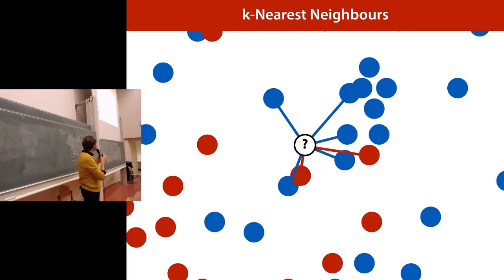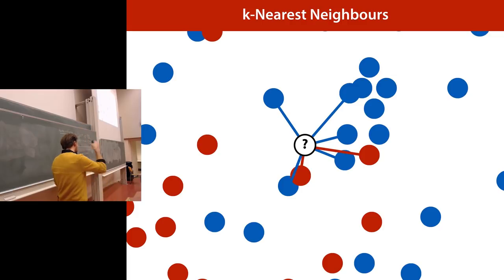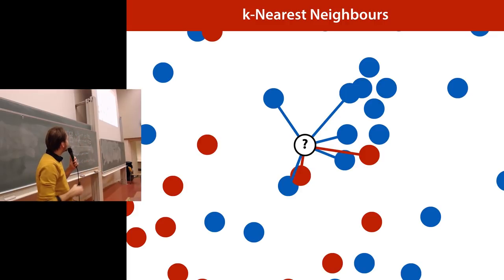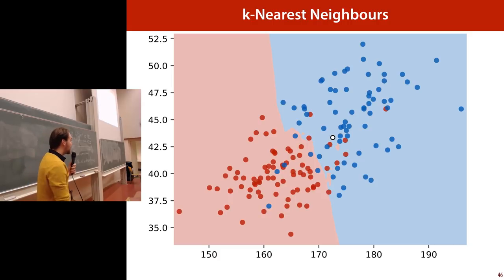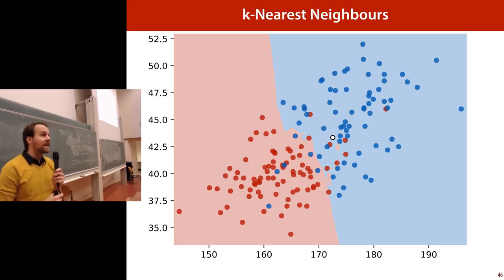Final example: k-nearest neighbors. It's a very simple principle — you don't really learn, you just memorize your dataset. Then when you get a new example, you look at the k nearest examples from your dataset that are closest. In this case, we look nearby and find five men and two women, so this point is probably a man. You just do a majority vote. It's a very simple and very powerful way of doing machine learning. Here's the coloring of the feature space — as you can see, it produces quite a complicated nonlinear boundary.